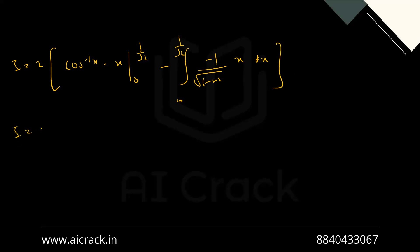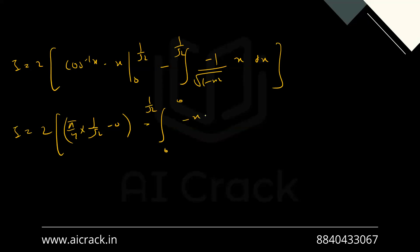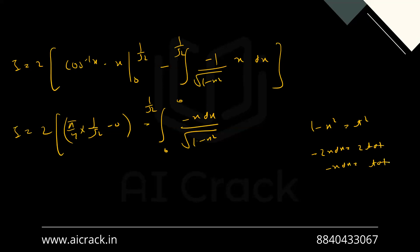So i equals 2 times: this gives π/4 times 1/√2 minus 0, minus 0, minus integral from 0 to 1/√2 of minus x dx over √(1 minus x²). Now if we take the substitution 1 minus x² = t², we get minus 2x dx = 2t dt, basically minus x dx = t dt.